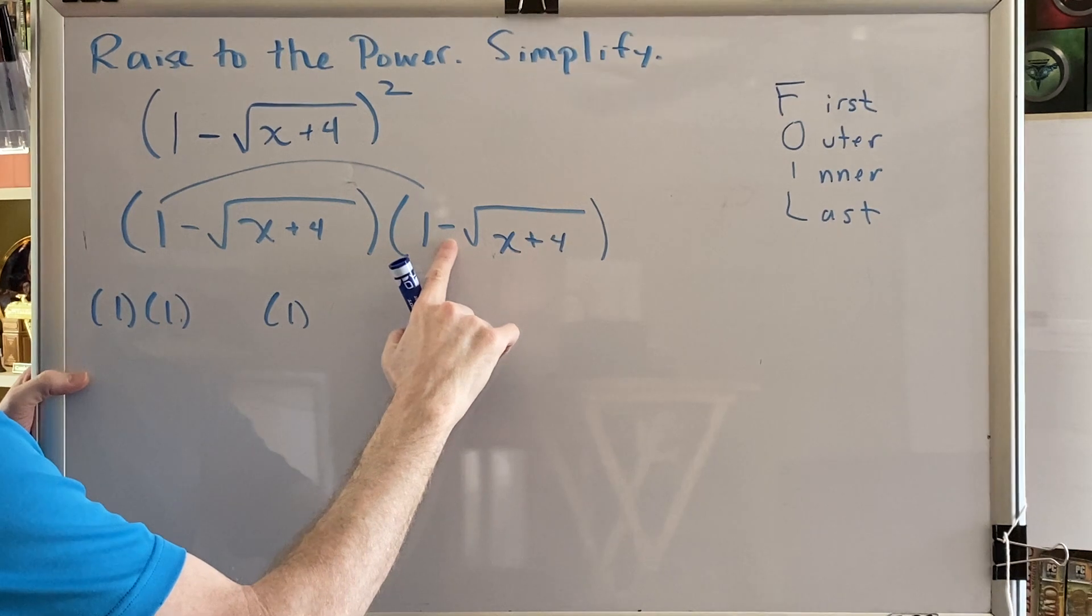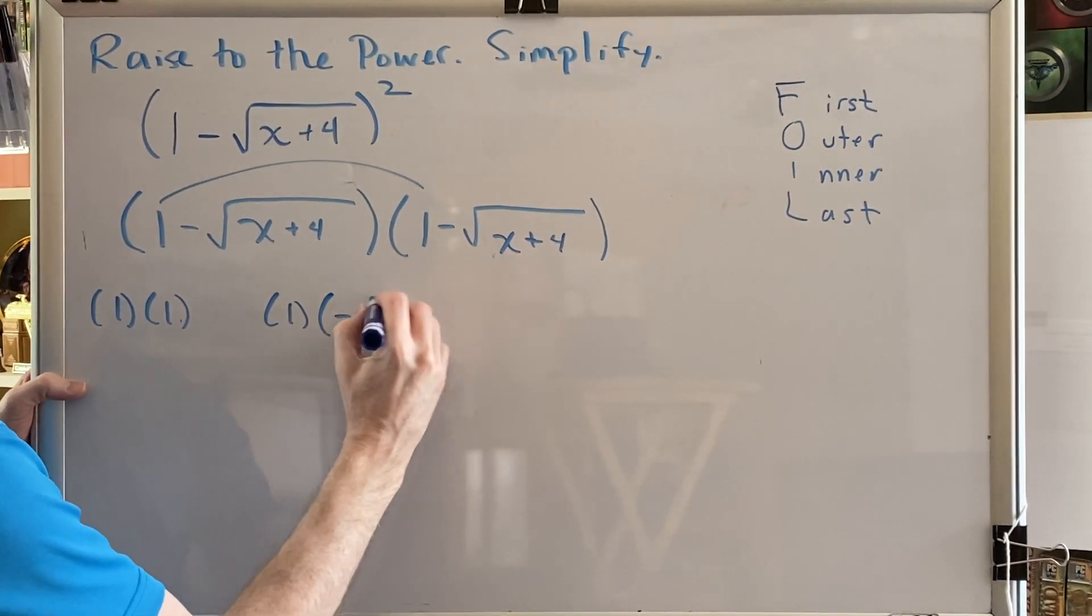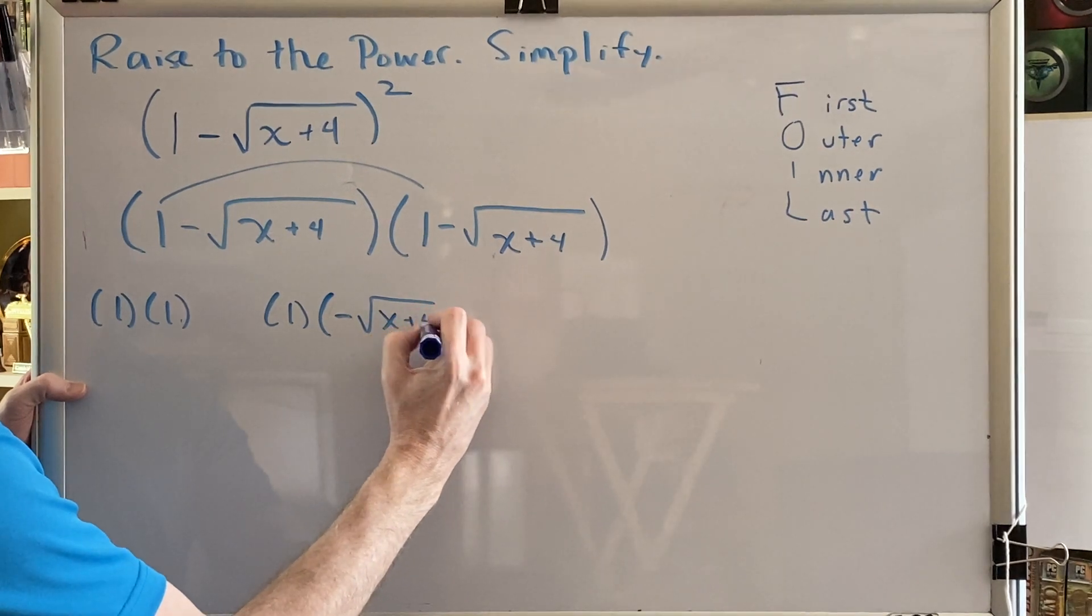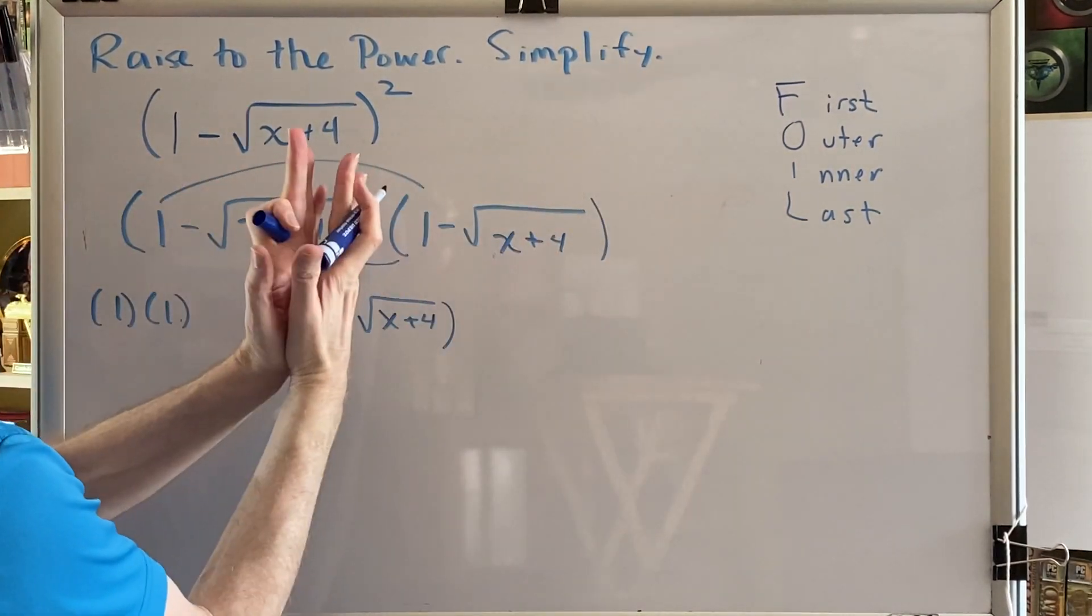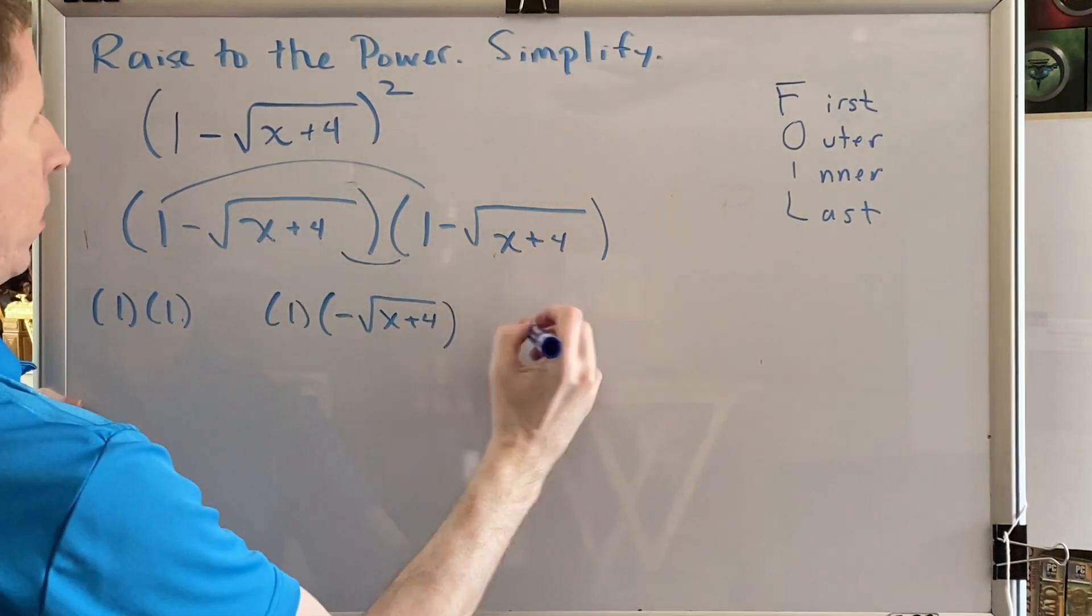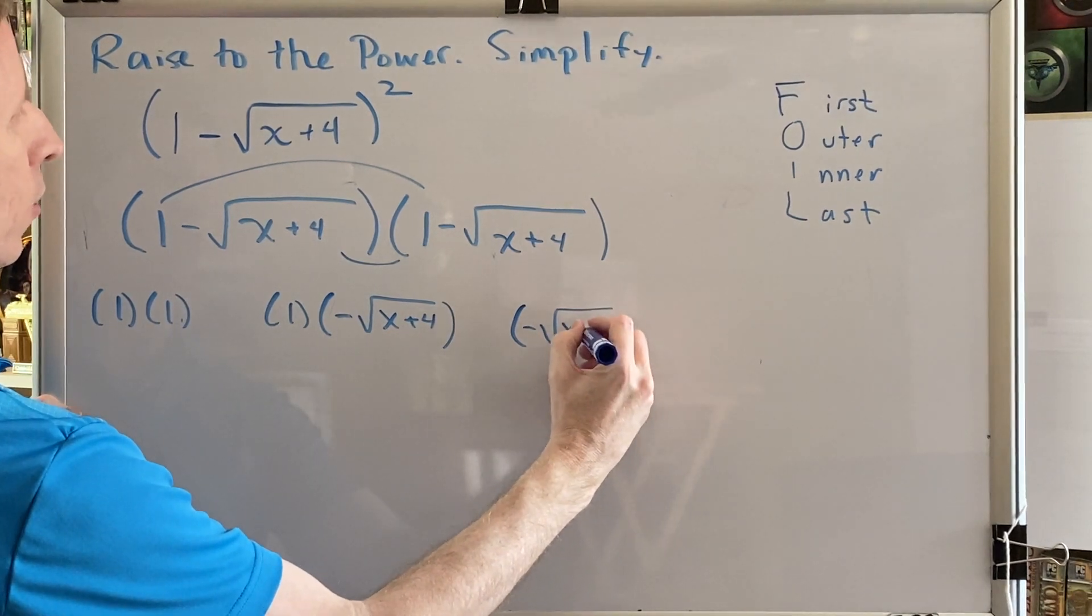Notice that it's being subtracted. That becomes a negative when you write it in FOIL format. So this would be a negative square root of the sum x plus 4. Inner would be the 2 on the inside. So that would be this subtracted radical and this 1. A subtraction sign becomes a negative when rewritten using FOIL.